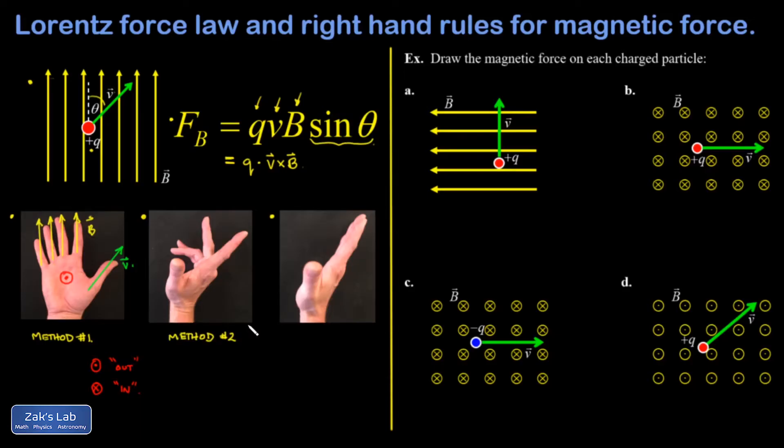In method number two, and this is the one that seems to be the most popular in textbooks, but it's just not the way I learned it, so I don't really use it very often. You take your index finger and let that point in the direction of the velocity vector. Your middle finger points in the direction of the magnetic field.